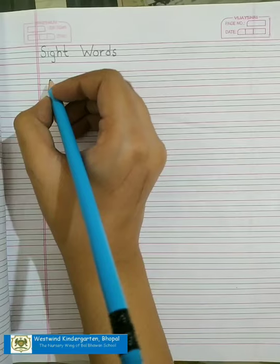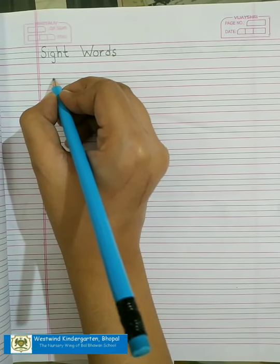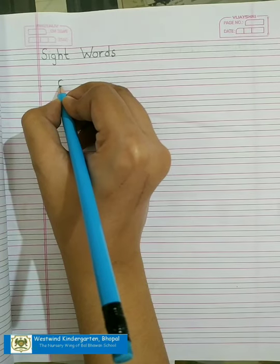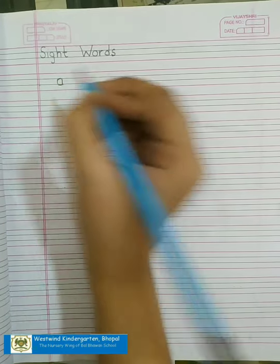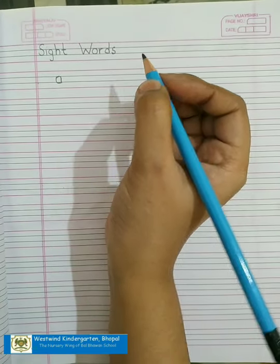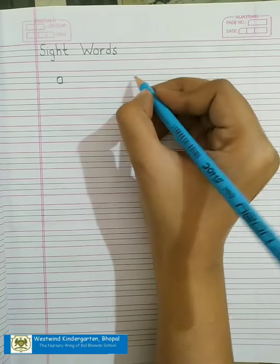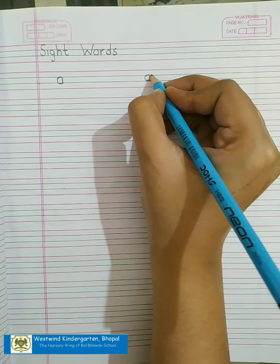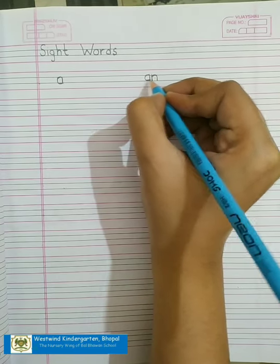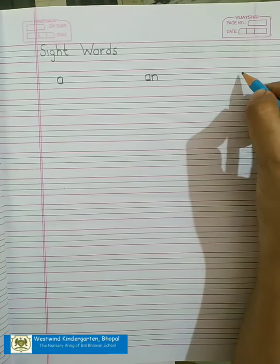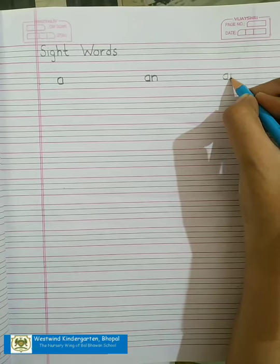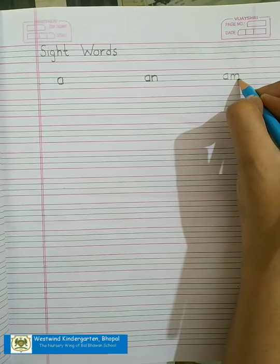Now here we will write the sight word A. A. So for A we have to write letter A like this. Next we have to write Aan. A, A, N, N. A, N, Aan. And here we are going to write A, A, M, A, M. Alright?